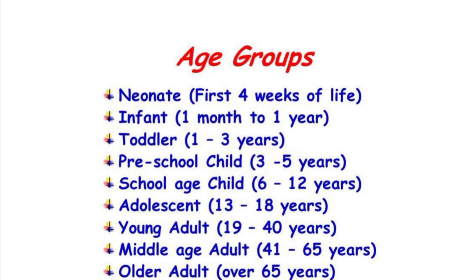Infant means 1 month to 1 year of age. Toddler is the age group of 1 to 3 years. Next, pre-school child is the age group of 3 to 5 years.